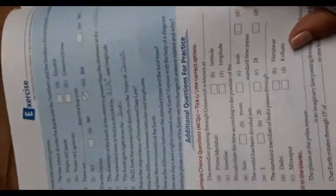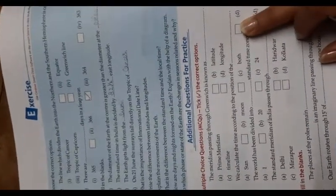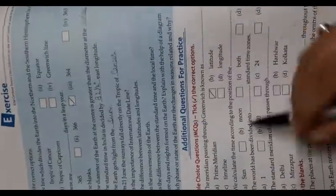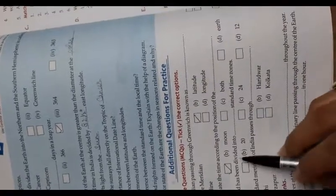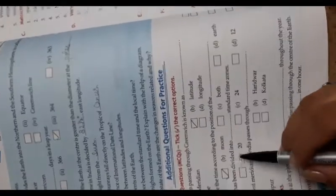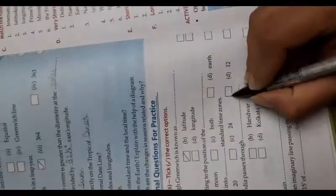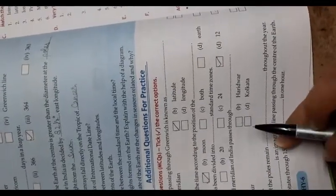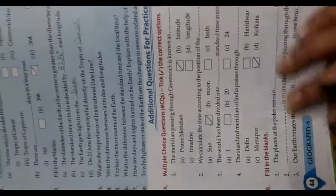Additional questions for practice. The meridian passing through Greenwich is known as the Prime Meridian. The world has been divided into 24 standard time zones. The standard meridian of India passes through Mirzapur.